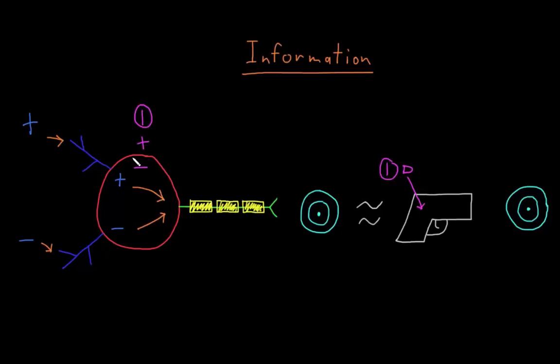These graded potentials are changes to the membrane potential away from the resting potential, which are small in size and brief in duration, and which travel fairly short distances. The size and the duration of a graded potential is proportional to the size and the duration of the input.